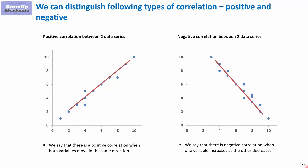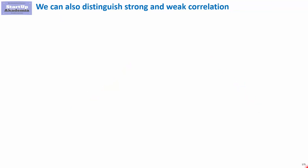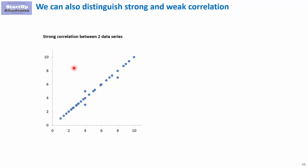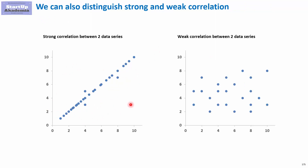Another important thing is that we can divide the correlation by strength into strong, where we can see that they behave in a similar manner, and weak, where there's actually hardly any correlation.